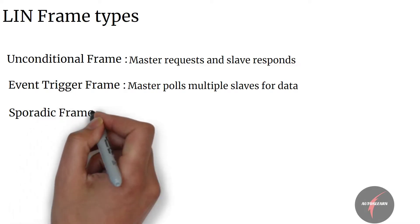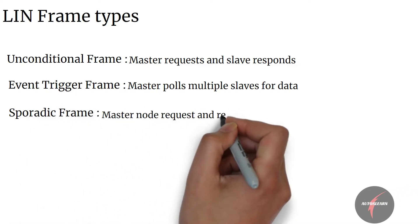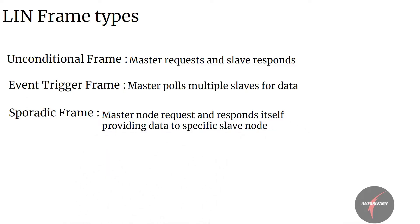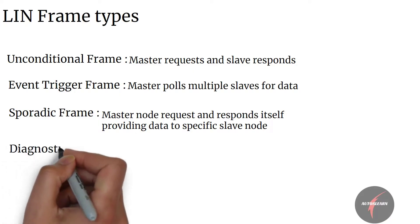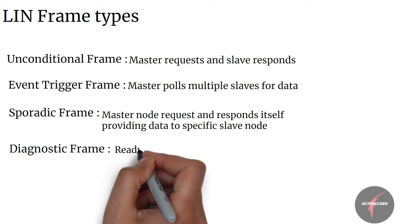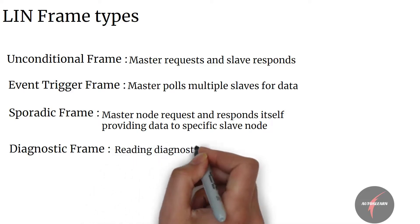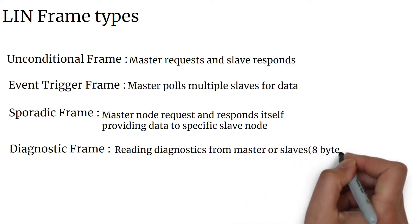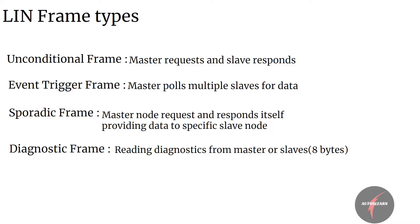A sporadic frame is sent by the master when it has to communicate updated data to a specific slave node. Here, the master acts as a slave publisher and responds to its own header, letting the slave node receive dynamic data. A diagnostic frame uses identifiers 60 and 61 for reading diagnostics from master or slave. These frames always contain 8 bytes of data, with ID 60 used for master request and ID 61 for slave response.